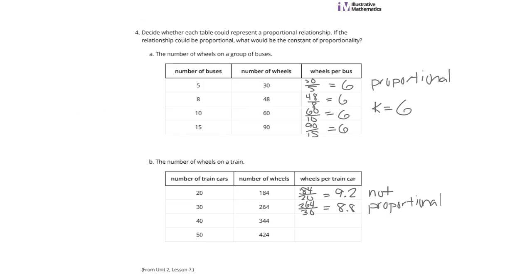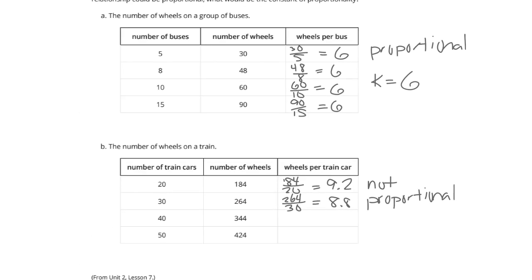Once we look at the difference again, the wheels per bus stayed the same. It was a constant 6. Whereas the number of wheels on the train, we could tell just from doing the first two, was not constant. And if you finish the question, 344 divided by 40 is 8 and 6/10. And 424 divided by 50 is actually 8 and 48/100. So it's definitely not going to be the same.